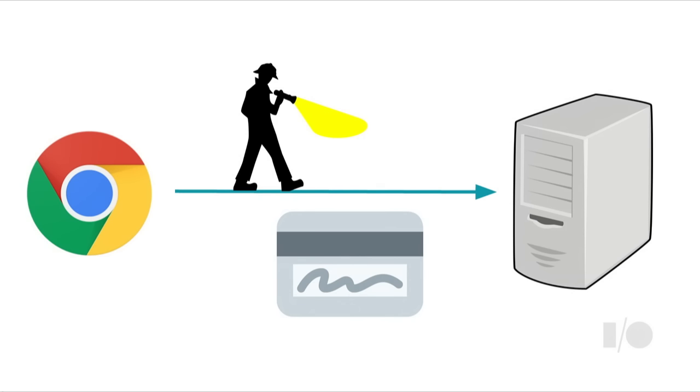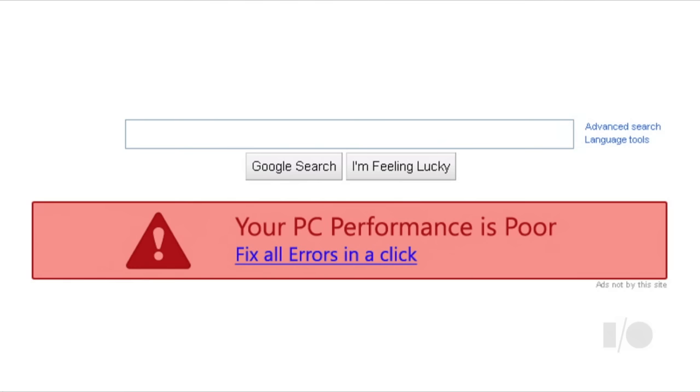If you woke up to this web in 2016, this very powerful web, you might be surprised to find that there are still websites where you can make a purchase with your credit card, or send a private message to a friend, or research a personal health condition in such a way that an attacker eavesdropping on the network can see all the data that you're sending back and forth.